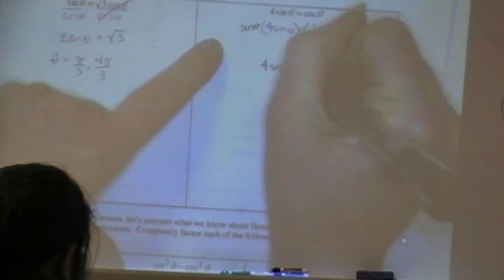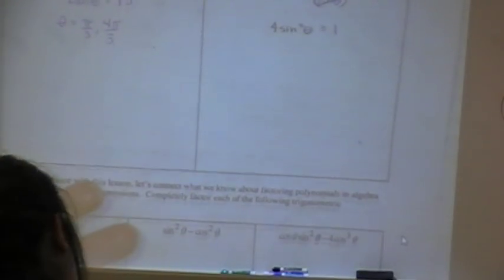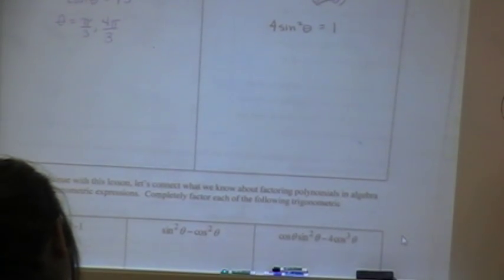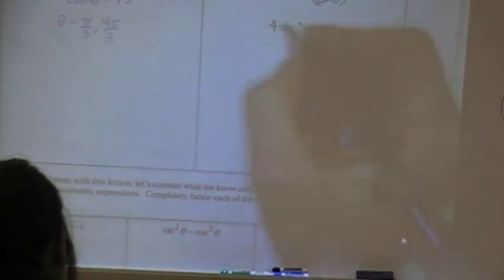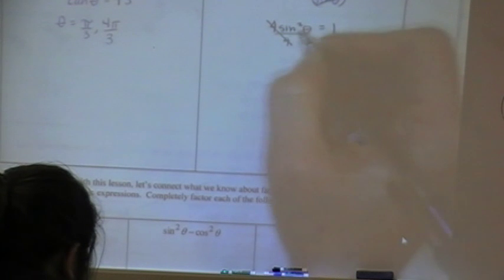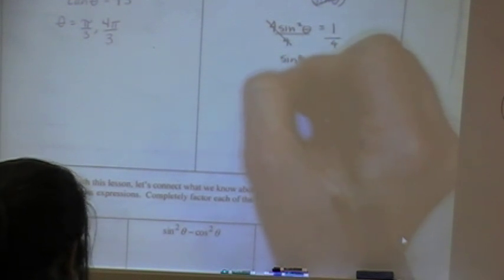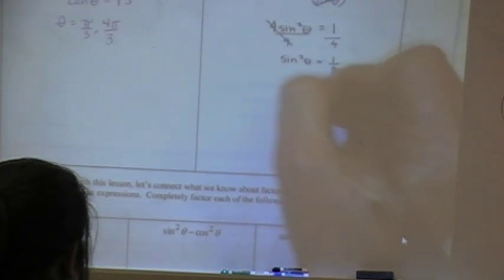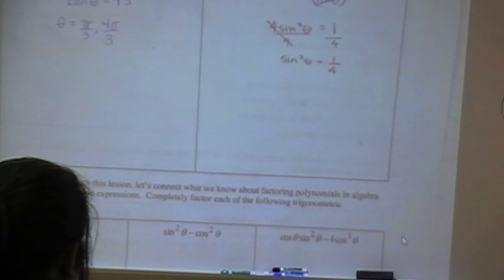So I have 4 sine squared theta equals 1. Now remember, the whole goal here is to get theta by itself. What should I do now? Divide by 4. Divide by 4. Okay, now I have sine squared theta equals 1/4. But I can't solve that either. I need sine theta.